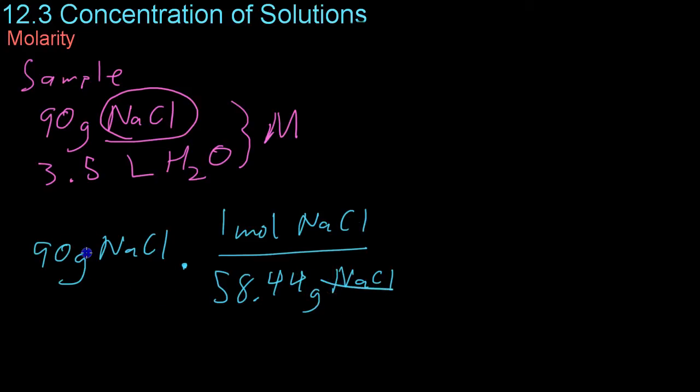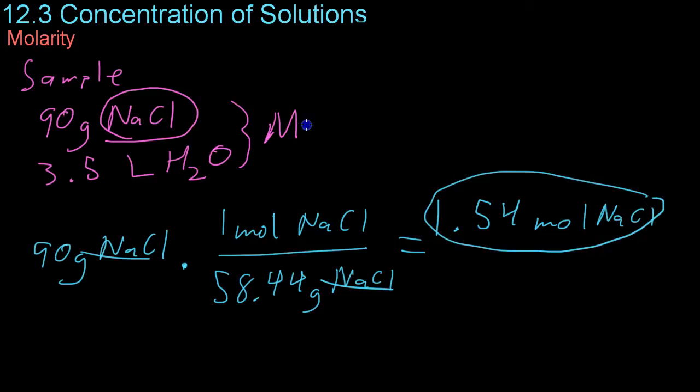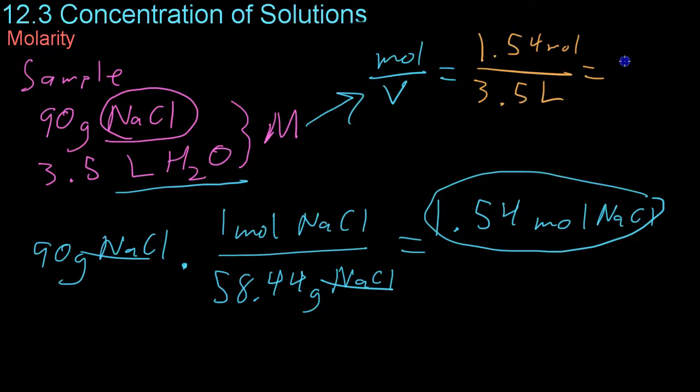Once again, you cancel the units, and you end up with 1.54 moles of salt. Now, you'll remember that molarity is simply moles per unit volume. So you plug in the molar amount and the volume that you have. In this case, you would take 1.54 moles for every 3.5 liters, and you would end up with a 0.44 molar solution of salt.